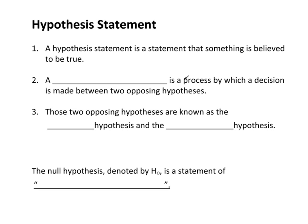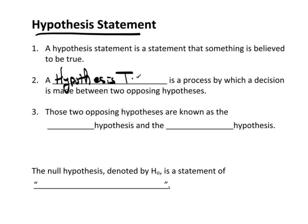Before we actually start doing confidence or hypothesis testing, there are several things we need to talk about first. A hypothesis statement is a statement that something is believed to be true. A hypothesis test is a process by which a decision is made between two opposing hypotheses. These two opposing hypotheses are known as the null hypothesis and the alternative.